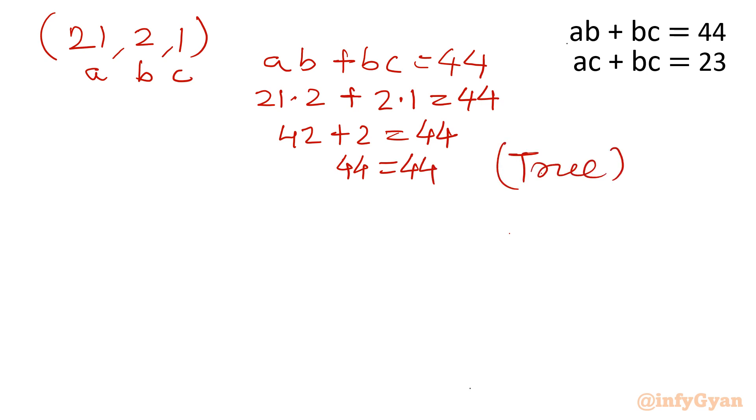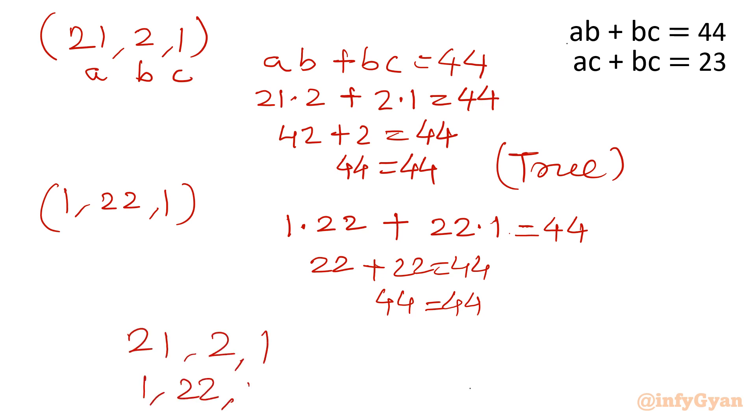Now last is 1, 22, 1. The second case of our triplet. That is 1 times 22 plus 22 times 1 equal to 44. 22 plus 22 equal to 44. So yes, it is also true. So there are 2 possible triplets: 21, 2, 1 and 1, 22, 1. This is our final answer.